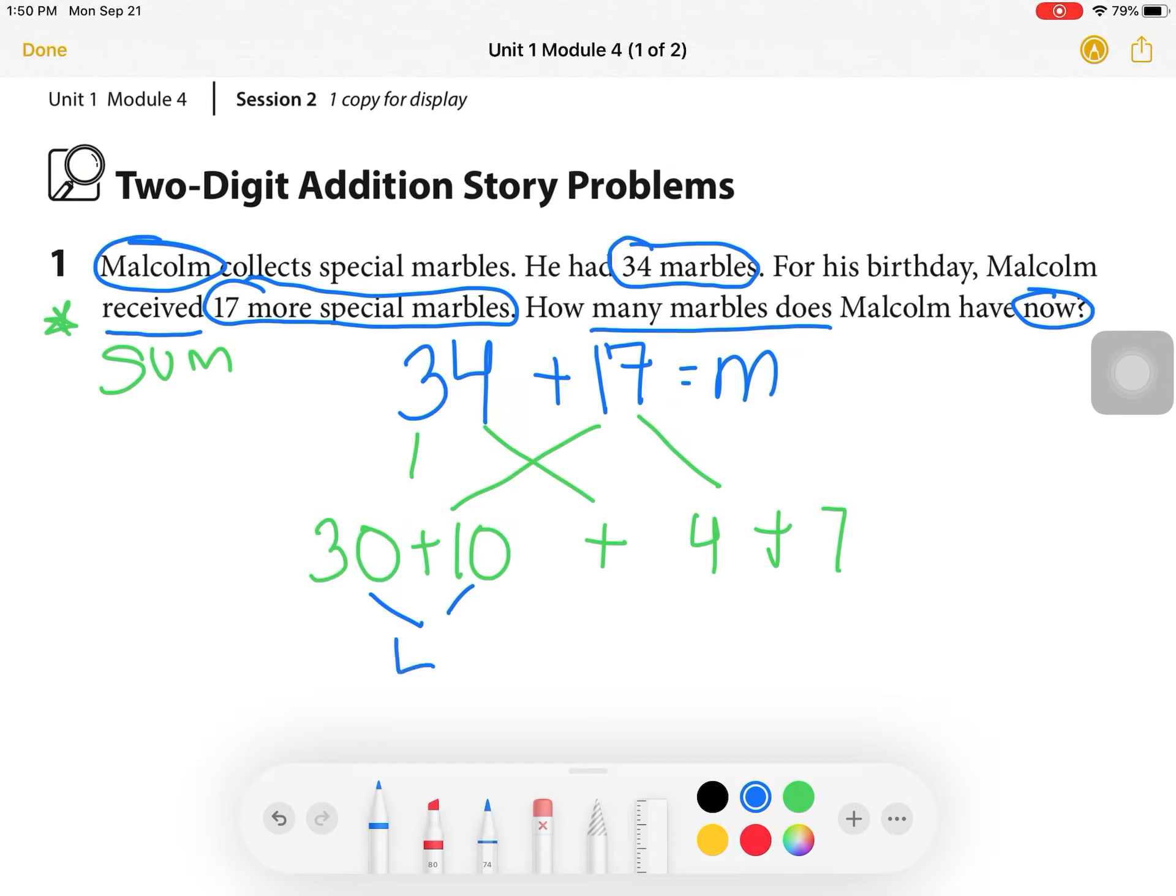So now we can start to string these together. A 30 plus a 10 is a 40. And then we're going to add these two together here, which equal 11. And that's going to give me a total of 40. I'm sorry, that's not correct. Let me erase that. A total of 51. 51 is because I've added my 40 and my 10 and my 0 and my 1. And I end up with 51. So that's one way to look at 34 plus 17.